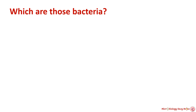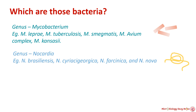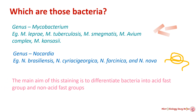The bacteria which can be stained by acid fast staining include bacteria belonging to the Mycobacterium genus, like Mycobacterium leprae, Mycobacterium tuberculosis, Mycobacterium smegmatis, Mycobacterium avium complex, and Mycobacterium kansasii. Besides that, Nocardia genus bacteria like Nocardia brasiliensis, Nocardia asteroides, Nocardia farcinica, and Nocardia nova can also be stained by acid fast staining. The main aim of this staining technique is to differentiate bacteria into acid fast and non-acid fast groups.